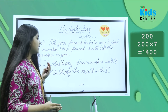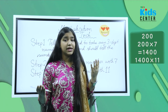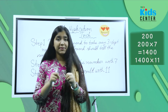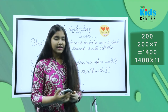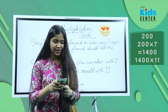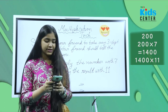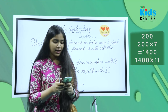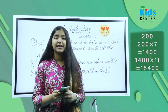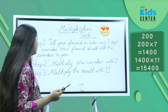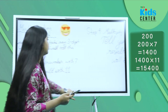Step three: multiply the result by 11. I'm back with the calculator — let's multiply 1400 by 11. 1400 times 11 equals 15,400. Now let's move on to the next step.